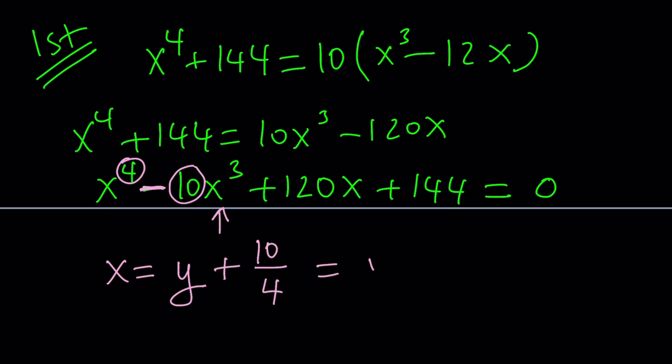So, in other words, if you replace x with y plus 5 over 2, if you simplify that, and then you'll get rid of the x cubed. Actually, it's going to be y cubed that disappears. In other words, you're not going to have a cubic term. And once you have that, you're going to have an equation like this.